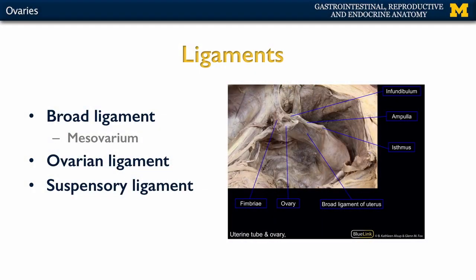There are numerous ligaments associated with the ovaries as well as with the uterus, and we'll talk about each one in turn, starting with the broad ligament. You can see a nice image of the broad ligament here — this is the uterus, and this is the ovary. The broad ligament is a large complex associated with the uterus, with three main components. When talking about the ovaries specifically, it is the mesovarium — which makes sense because you're referring to the ovaries.